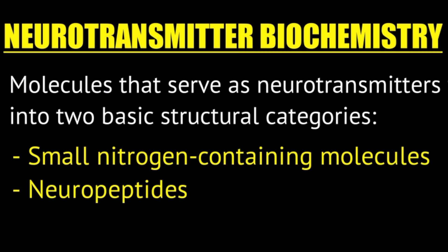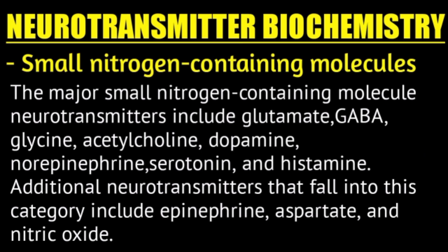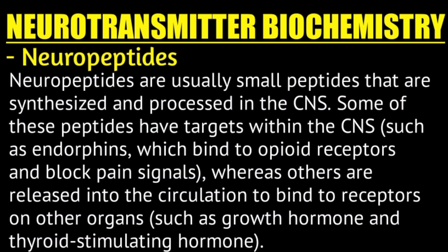Molecules that serve as neurotransmitters fall into two basic structural categories: small nitrogen-containing molecules and neuropeptides. Small nitrogen-containing molecules include glutamate, GABA, glycine, acetylcholine, dopamine, norepinephrine, serotonin, and histamine — all contain nitrogen in their structures.